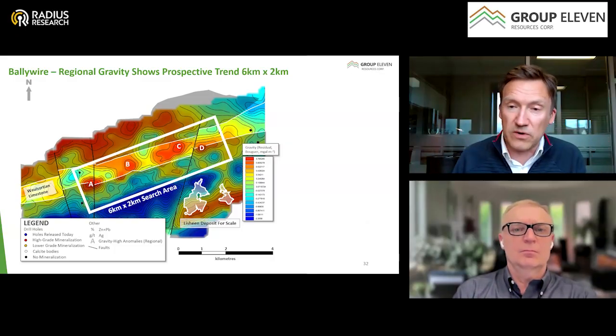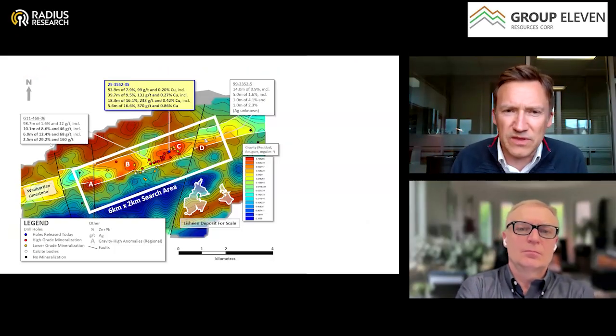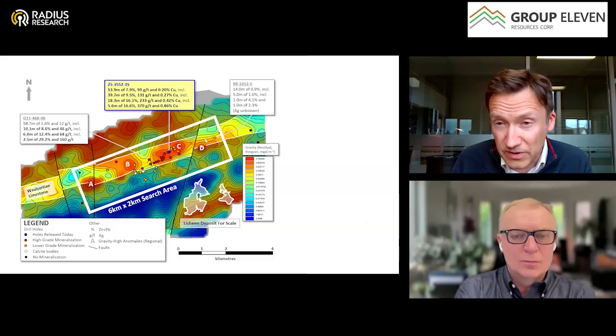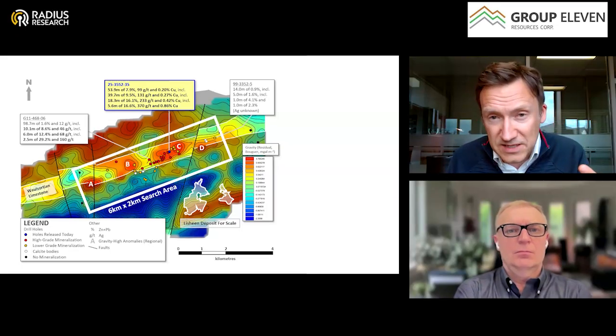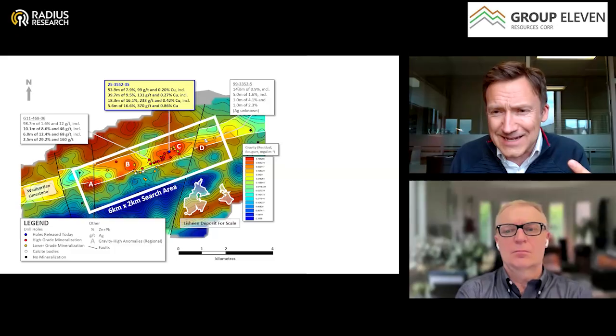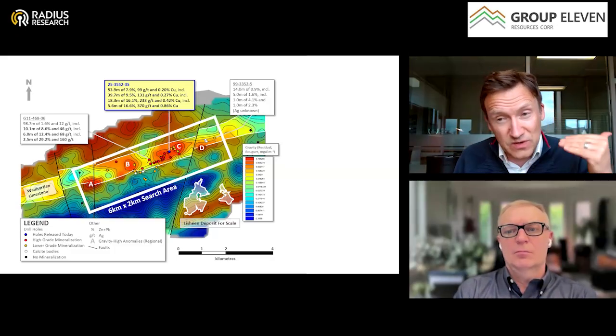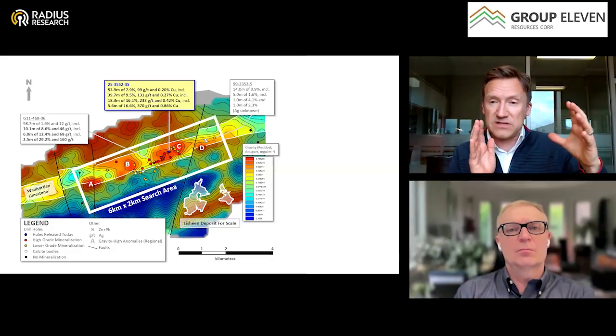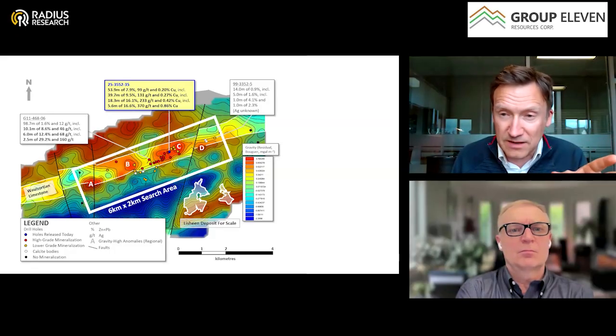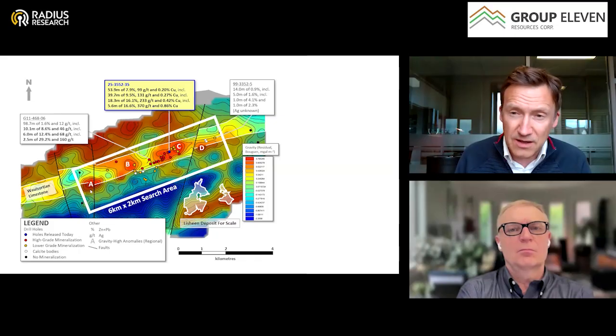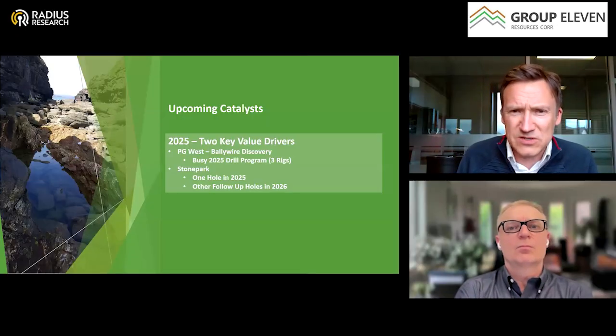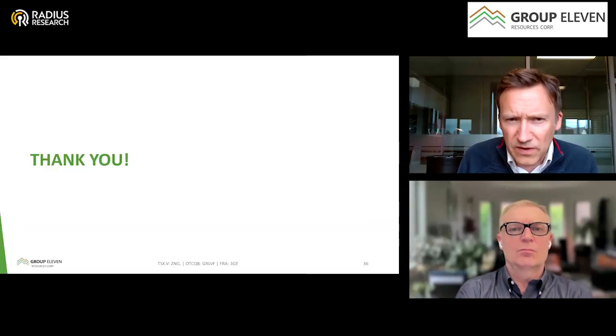We have a six kilometer trend defined by four gravity high anomalies A through D. The discovery we made, all the drilling so far, has been pretty much on the C anomaly. We just moved to the D anomaly with that third rig, the 1.3 kilometer step-out. The D area is very interesting because it has the gravity anomaly plus two calcite-bearing holes. About a kilometer away we have a historic hole from 1999 which hit 14 meters of 1 percent zinc and lead including a meter of 4 percent. The B anomaly, we just touched with one hole last year. The A anomaly we haven't even started thinking about drilling yet, but before year end we hope to have at least a fan of drilling on all the A, B, and D anomalies.